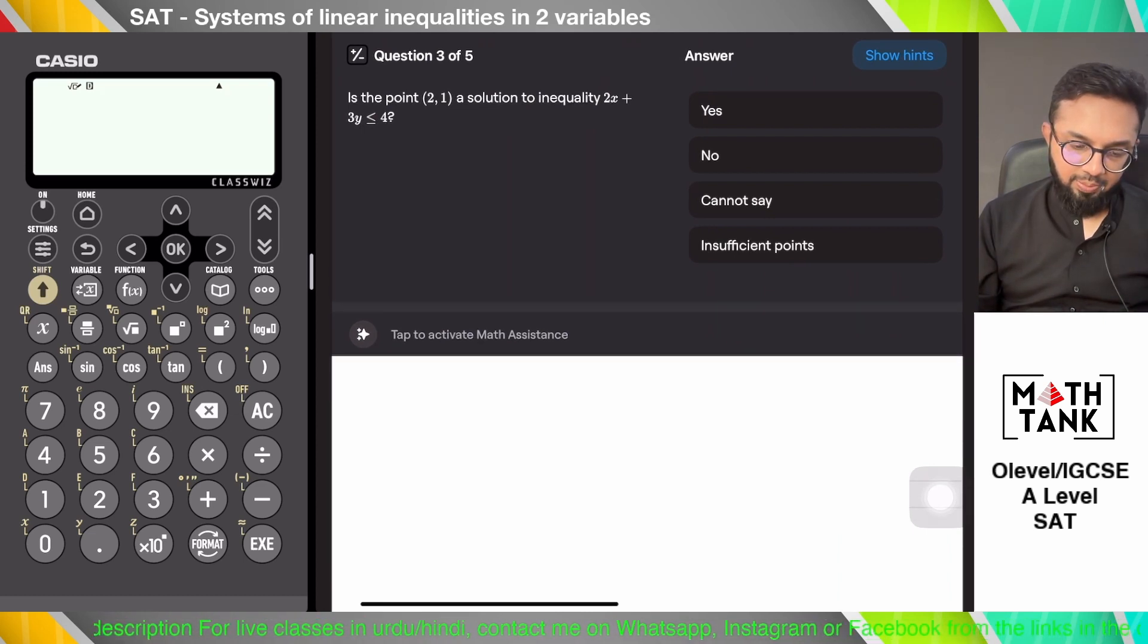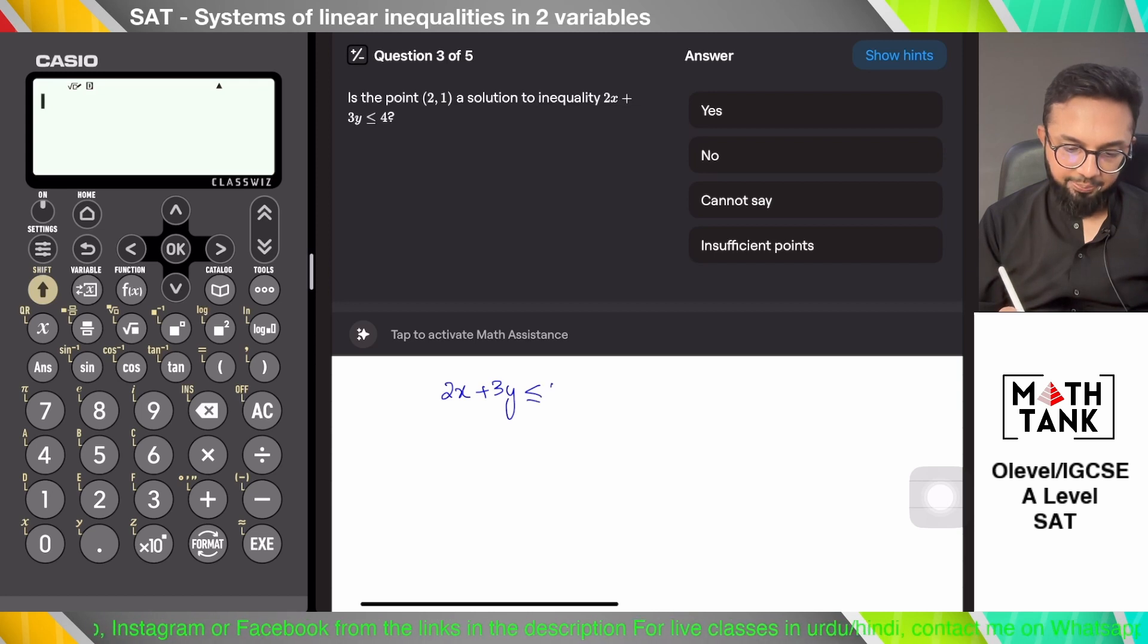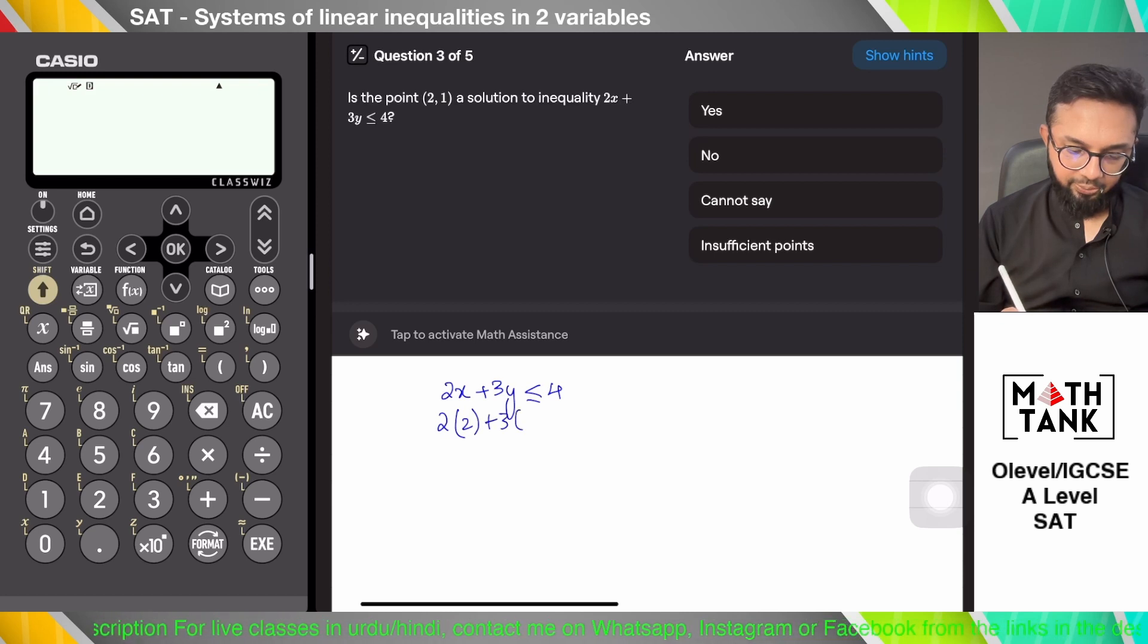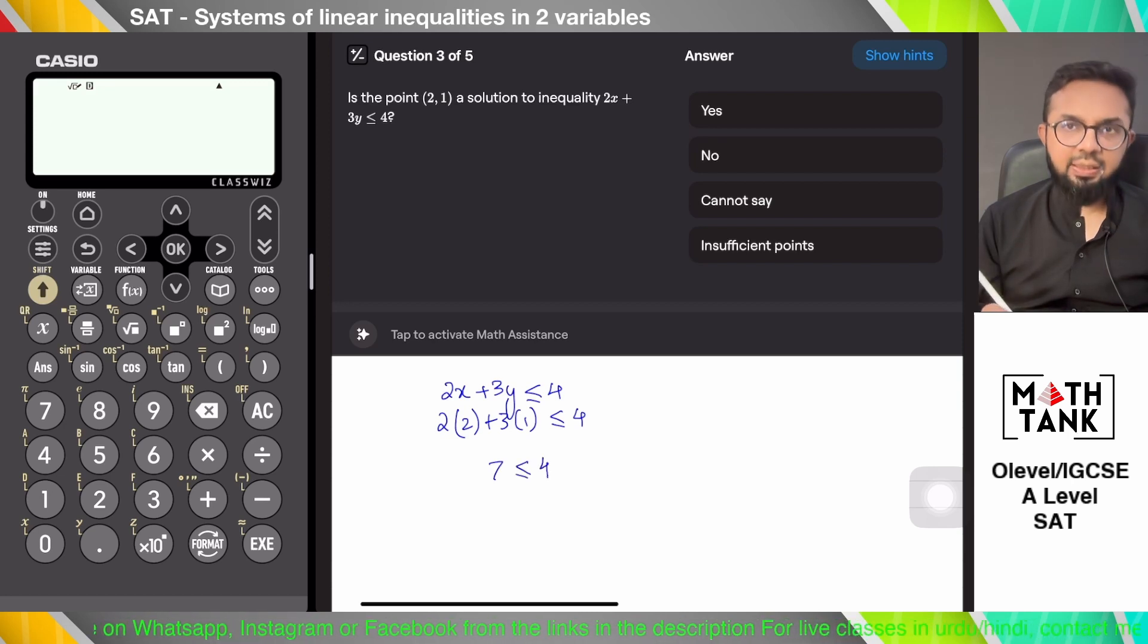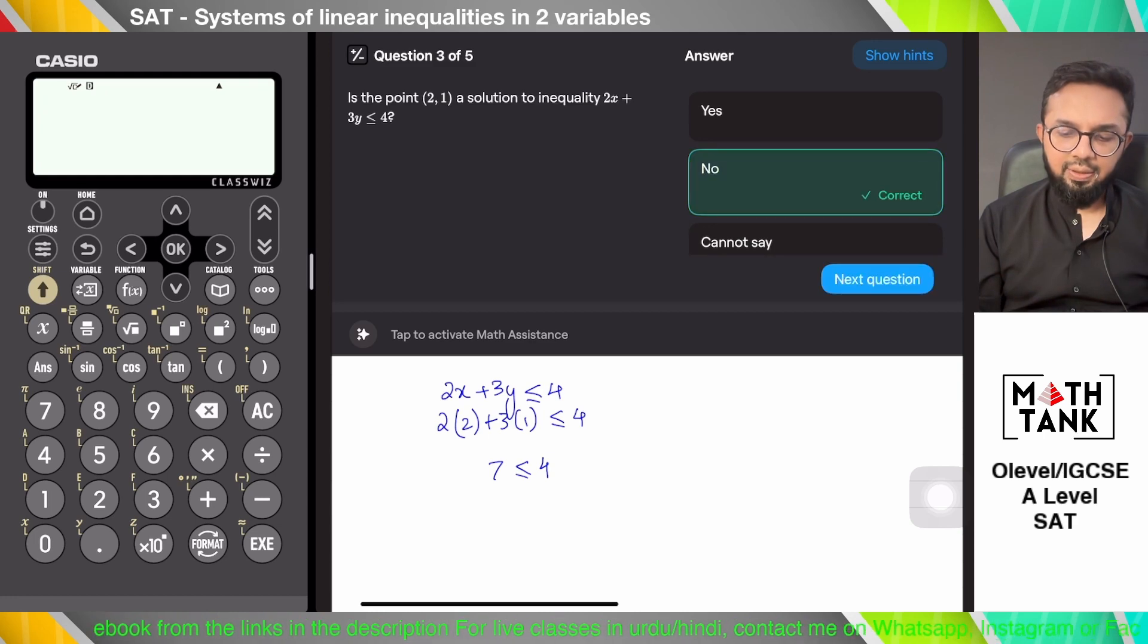Is the point (2,1) a solution to the inequality 2x plus 3y is less than or equals to 4? You can only know this by plugging it in. 2 times 2 plus 3 times 1 is less than or equals to 4. 4 plus 3 is 7. 7 is less than or equals to 4. That doesn't sound right. Therefore, no, this point didn't serve as a solution set.